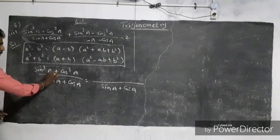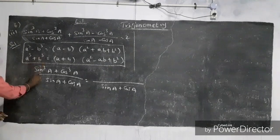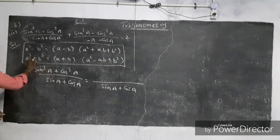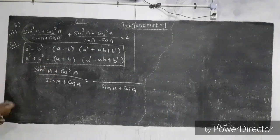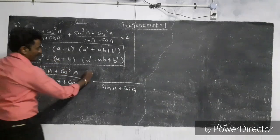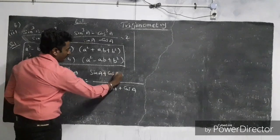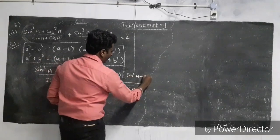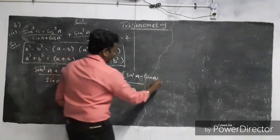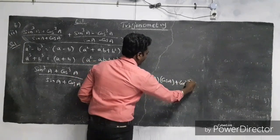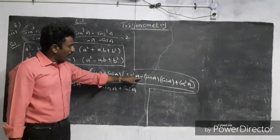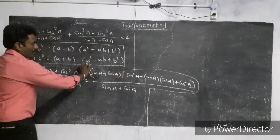sin³A plus cos³A — using a³+b³ identity where a equals sin A and b equals cos A. So a³+b³ equals (A+B)(A²−AB+B²), which gives (sin A + cos A)(sin²A − sin A cos A + cos²A).